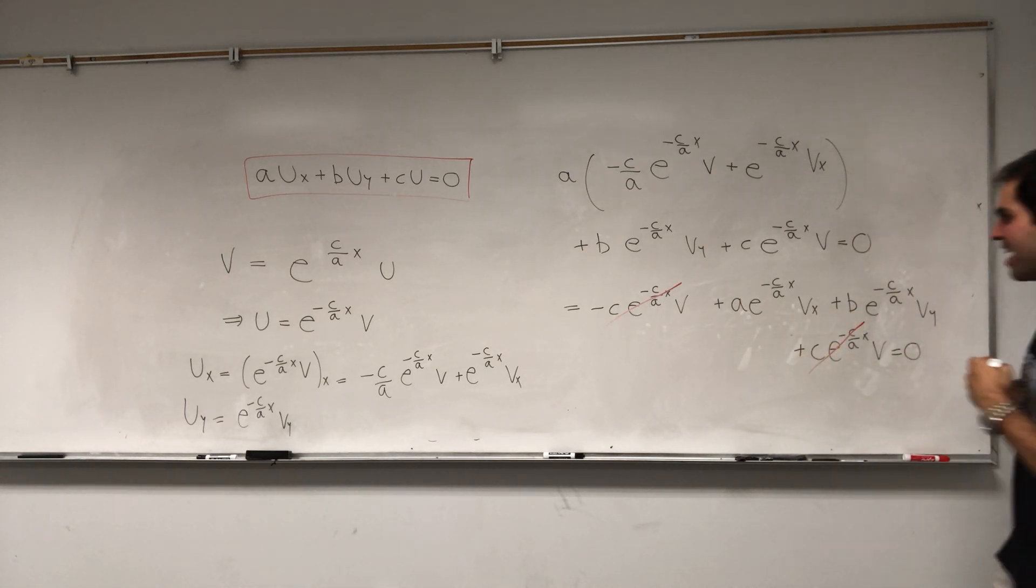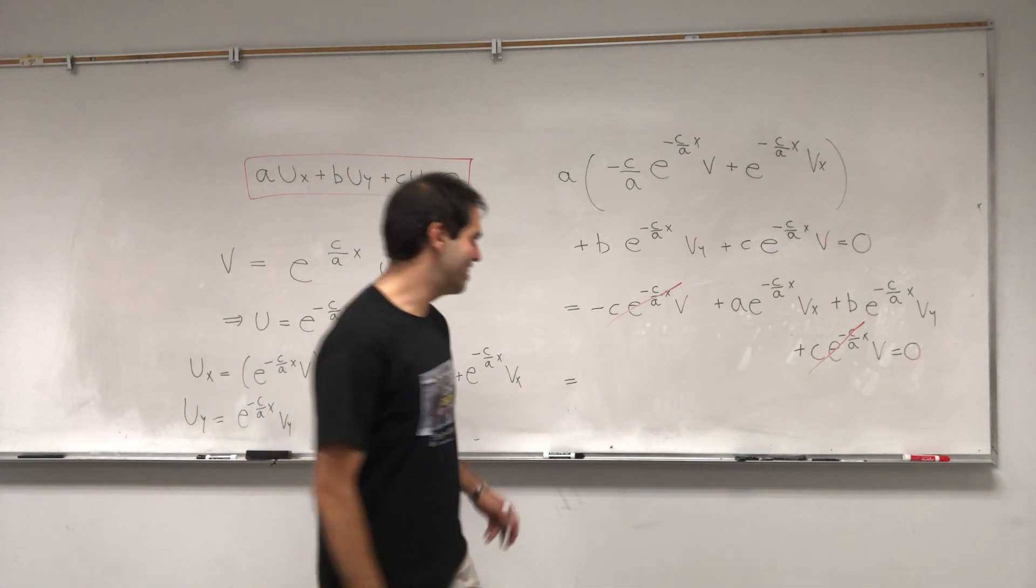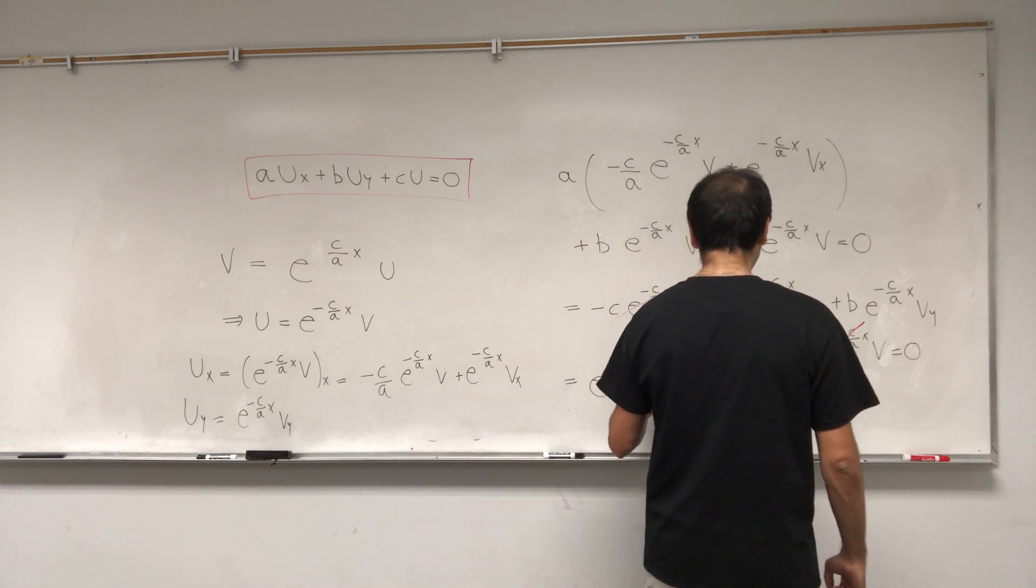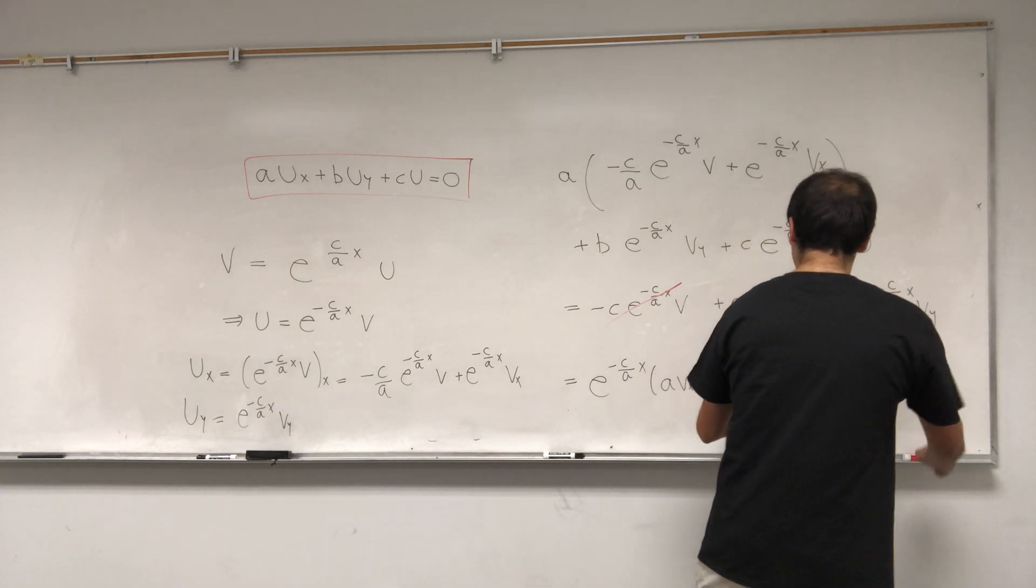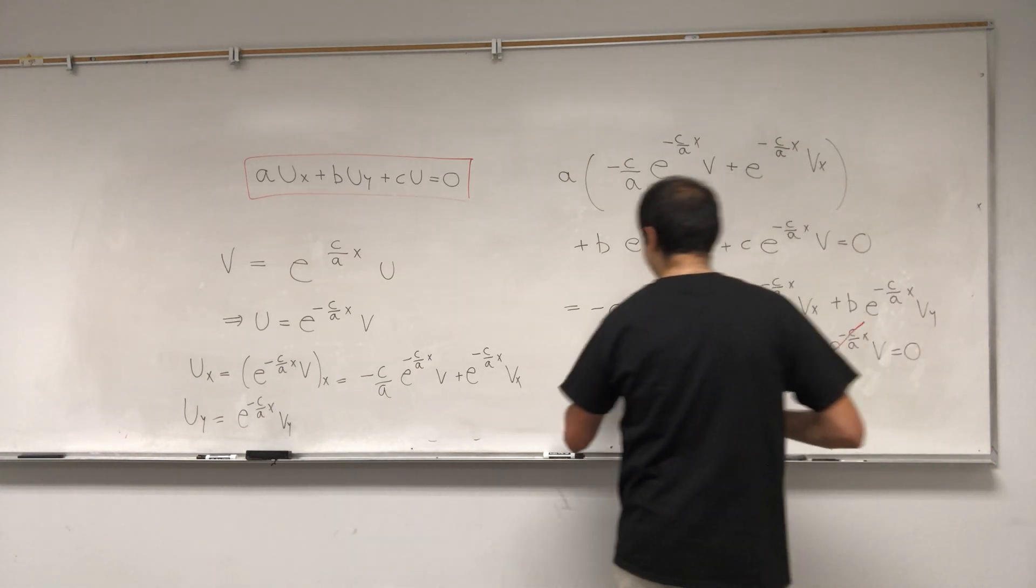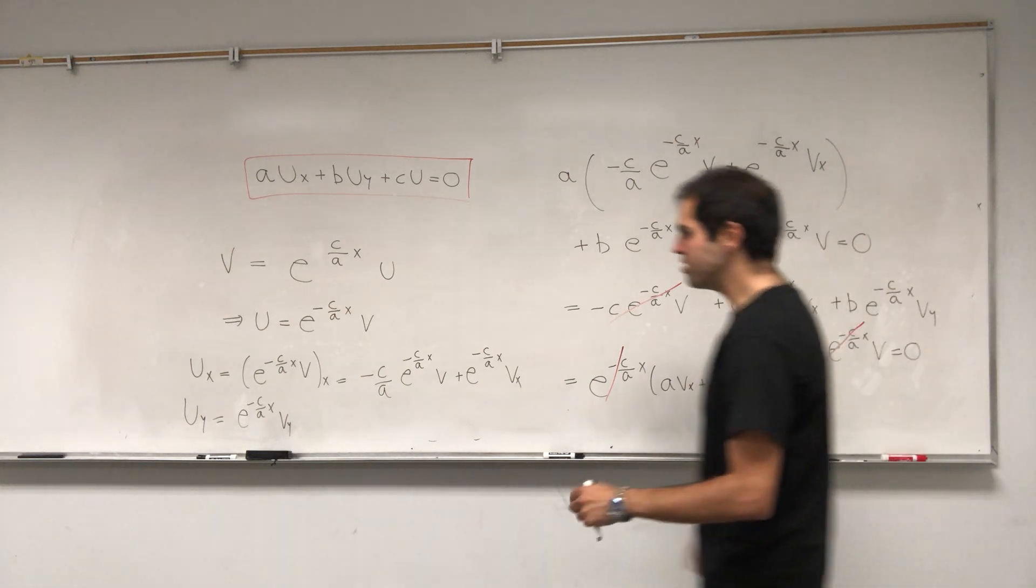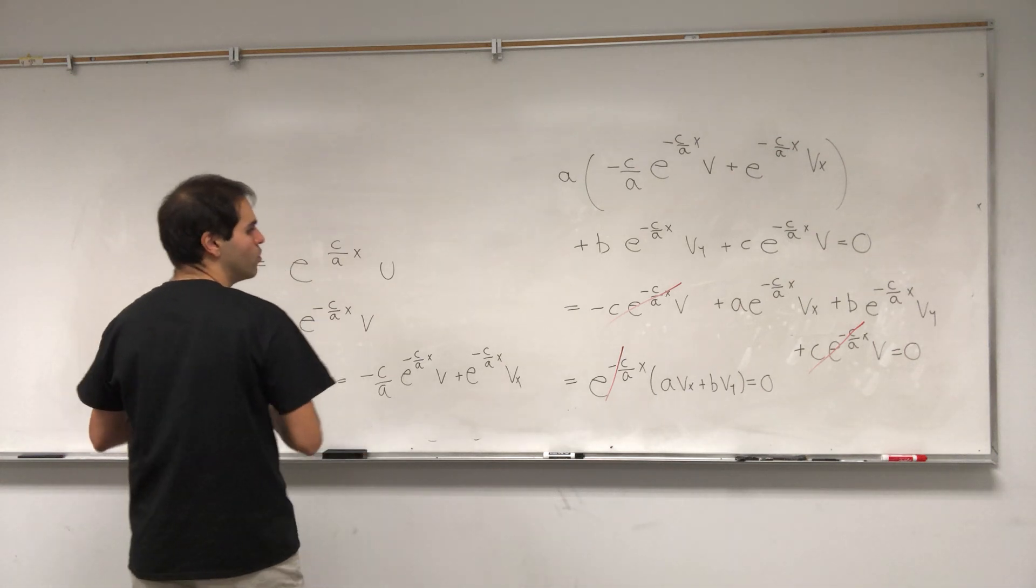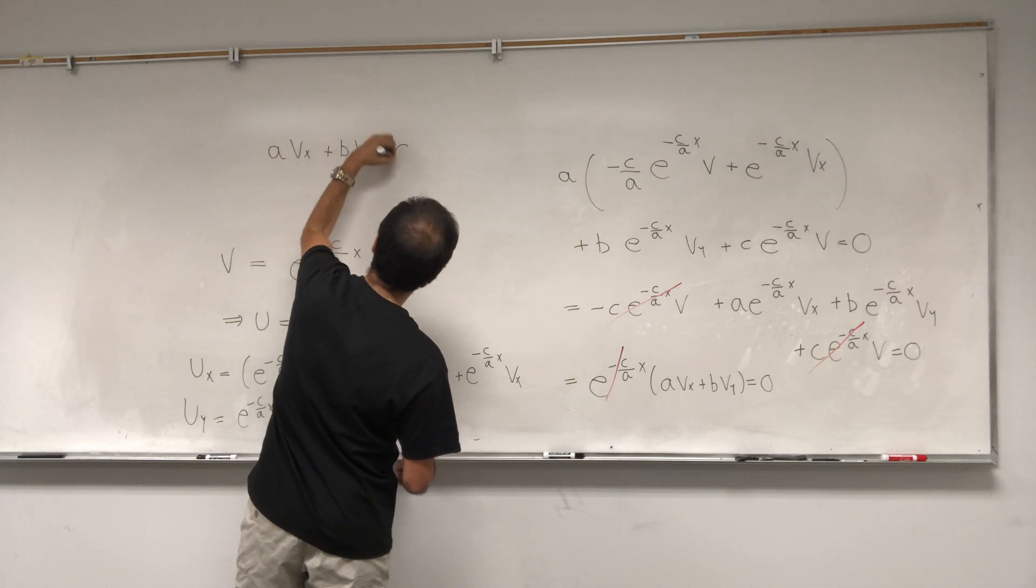And then what we're left with is this thing. It looks horrible because it still has this exponential term, but just like Yoshi in Super Mario, we'll use this to help us, and then we'll betray it. So let's cancel this one out as well. E to the minus C over AXAVX plus BVY equals 0. This cancels out, and lo and behold, we divide by this term, and lo and behold,